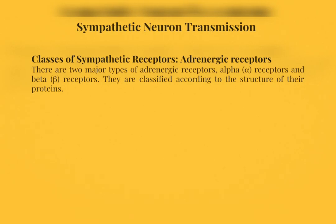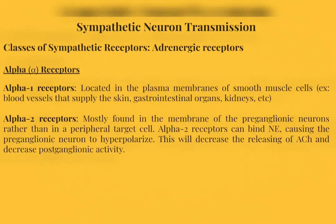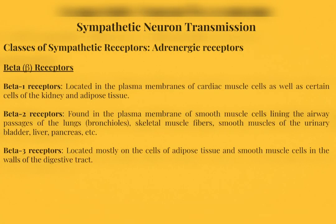Adrenergic receptors have two classes: alpha and beta, both classified by their protein structure. Alpha-1 receptors are located in the plasma membranes of smooth muscle cells. Alpha-2 receptors are mostly found in the membranes of preganglionic neurons; they can bind to norepinephrine, causing the preganglionic neuron to hyperpolarize, which decreases acetylcholine release and decreases postganglionic activity. There are three types of beta receptors: beta-1 found in cardiac muscle cells, certain kidney cells, and adipose tissue; beta-2 found in smooth muscle cells lining the airway passages of the lungs, skeletal muscle fibers, smooth muscles of the urinary bladder, liver, and pancreas.